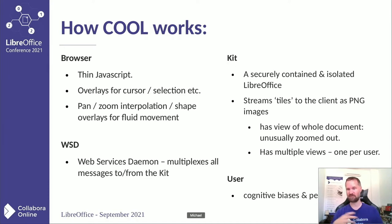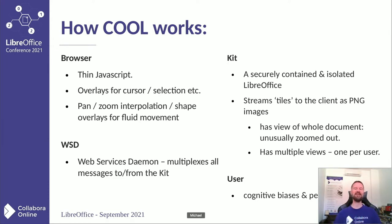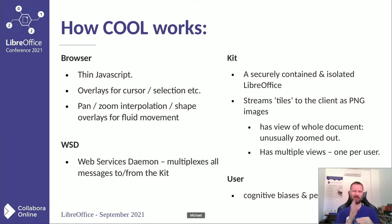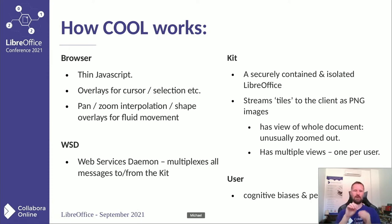On top of that, we have a daemon that multiplexes messages from all users to many isolated kits — another potential source of performance problems. Messages are sent from the kit through the web service daemon, sometimes via a proxy, then to the actual browser. In the browser there's a relatively thin piece of JavaScript. We have overlays for cursors so cursor blinking doesn't cause bandwidth use, selections are overlaid, and as you pan and zoom we interpolate on the client for a fluid, smooth experience.